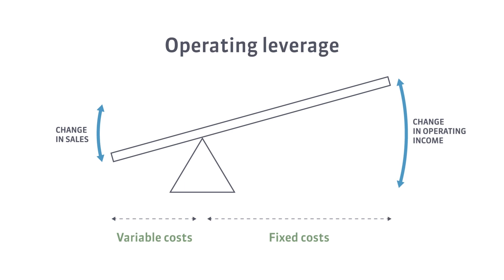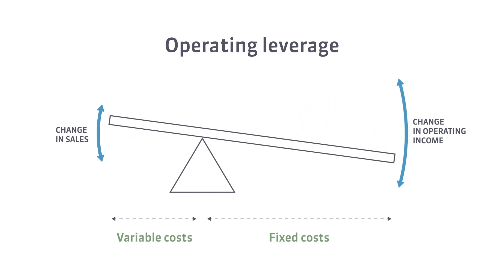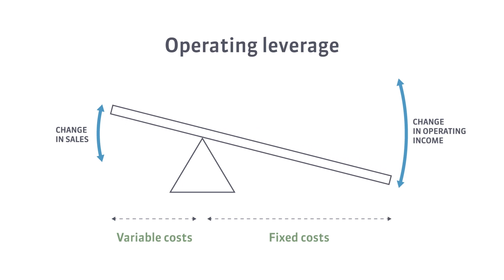But be careful, because leverage is a two-edged sword. Companies with a higher operating leverage will also experience greater reductions in operating income as sales decrease. For this reason, the mix of costs that an organization chooses can have a considerable influence on its operating risk and profit level.